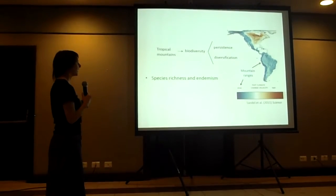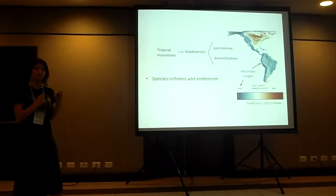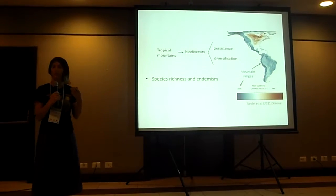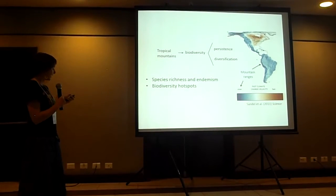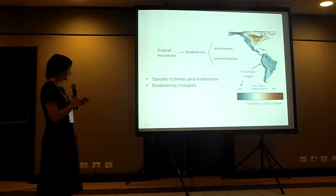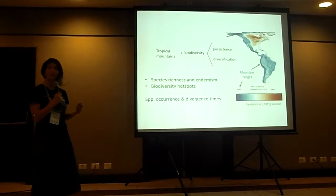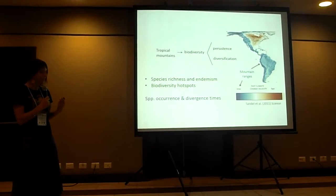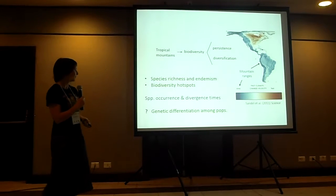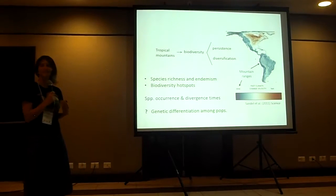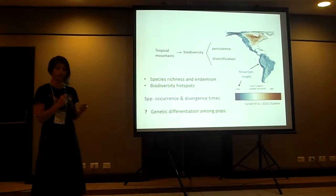This kind of phenomena has been studied at the species richness level. This is why the mountains are so rich in endemics, thus becoming biodiversity hotspots. This kind of data has been focused mostly on species' occurrence and divergence times among species, but little attention has been paid to what's going on at the genetic level — that is, what is driving genetic differentiation among populations on tropical mountains.